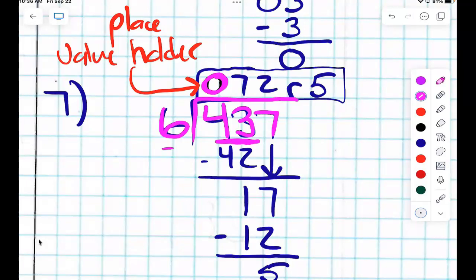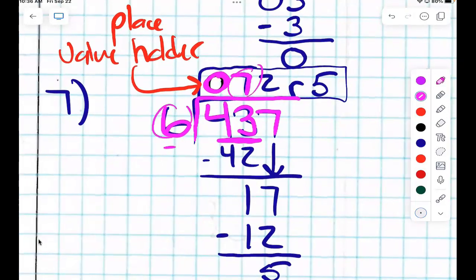So in McDonald's math, we say does McDonald's serve burgers rare, and the D stands for? Divide. And how many times does six go into 43? Seven. Seven. So I'm going to put a seven up here. Does McDonald's, what does McDonald's stand for now? Multiply. And I'm going to multiply the seven by the? Six. The seven by the six, right? So what is seven times six? 42. It's 42. We need to know this, right? So now we've multiplied.